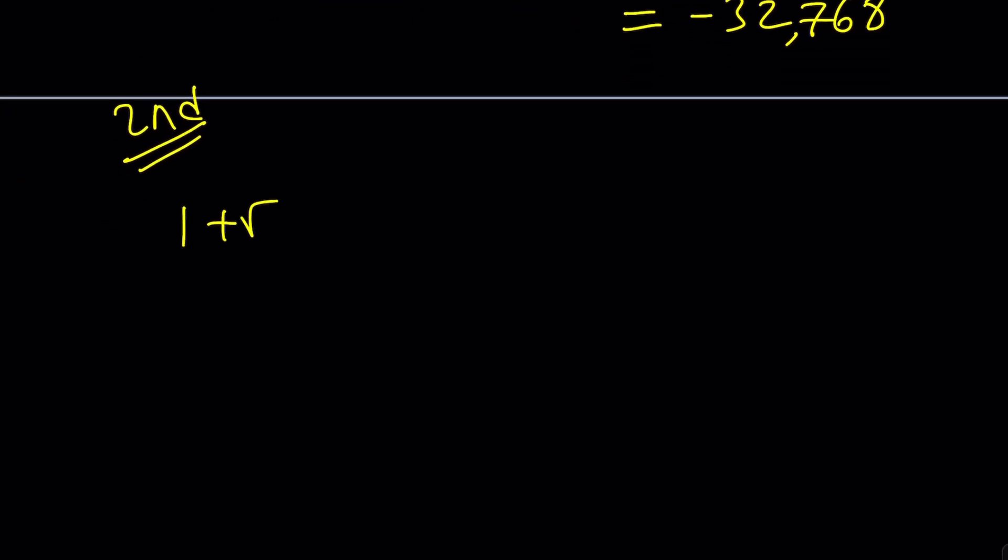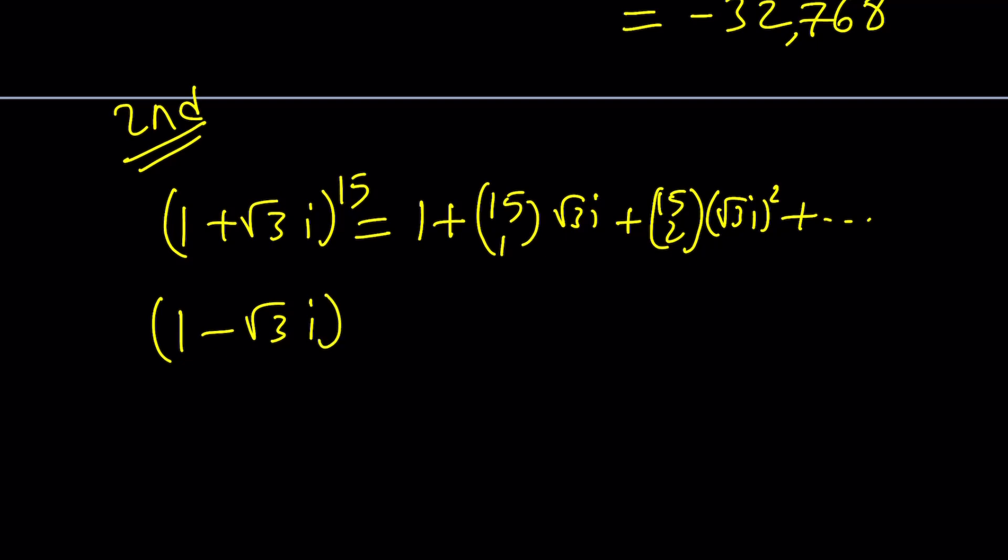For my second method, I want to go ahead and expand this expression. By using the binomial theorem, this is just going to be 1, and then we're going to have 15 choose 1, and then root 3i. I don't have to worry about powers of 1, because they're all going to be 1, and then 15 choose 2, root 3i to the second power, so on and so forth. There's going to be 16 terms, a lot of terms, too crazy. But one thing that I want you to keep in mind is that we're going to be getting the conjugate. If I raise the conjugate to the 15th power, I'm going to be getting the same thing, but with alternating terms.